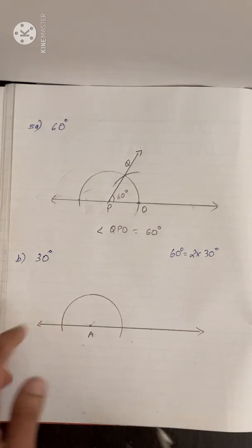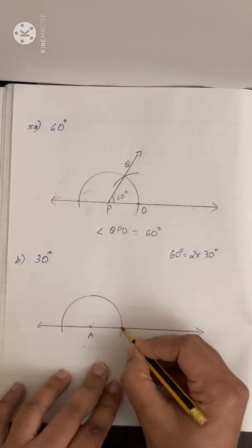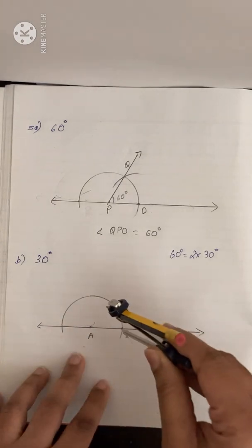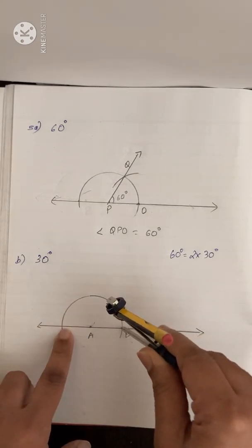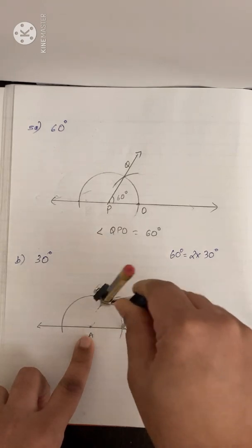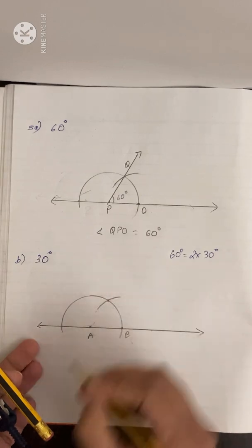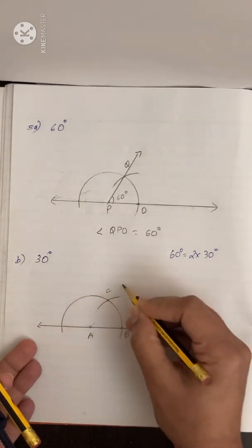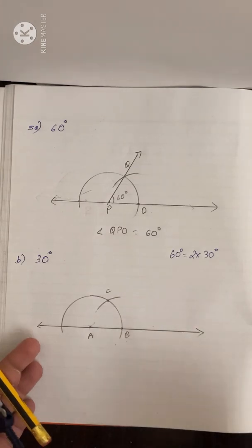The two ends of the arc should cut on the line. Let that point be B. Now with B as center, we are going to construct 60 degrees first, then construct the bisector of it. If we join point A and C, we get 60 degrees. Now, how will we construct the bisector?